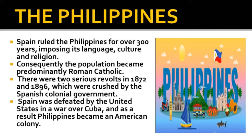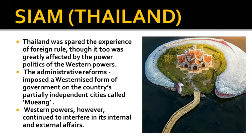The Philippines: Spain ruled the Philippines for over 300 years, imposing its language, culture and religion, consequently making the population predominantly Roman Catholic. Nationalism developed among Filipinos during the latter part of the 19th century, with serious revolts in 1872 and 1896 crushed by the Spanish colonial government. In 1898, Spain was defeated by the United States in a war over Cuba, and as a result the Philippines became an American colony. Siam (Thailand) was spared foreign rule, though greatly affected by Western power politics. Administrative reforms of the late 19th century imposed a westernized form of government, though Western powers continued to interfere in its internal and external affairs.